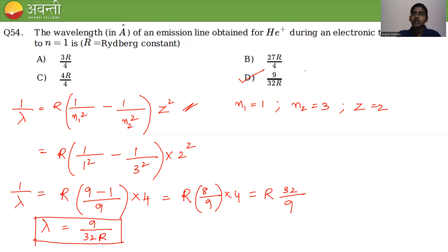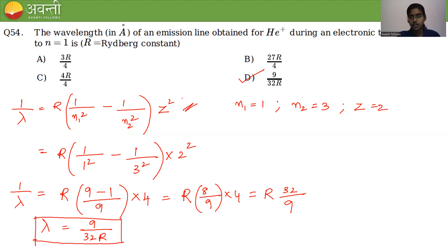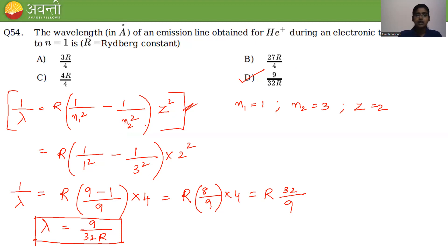If lithium 2+ is given, substitute Z = 3 because the atomic number of lithium is 3. If the initial and final states are different, substitute accordingly in place of n₁ and n₂. We are essentially applying this Rydberg formula to each question.